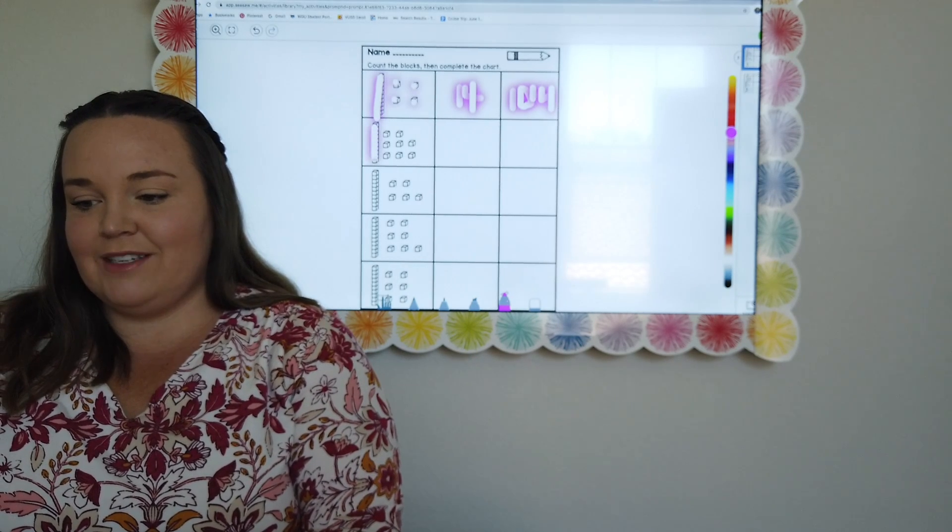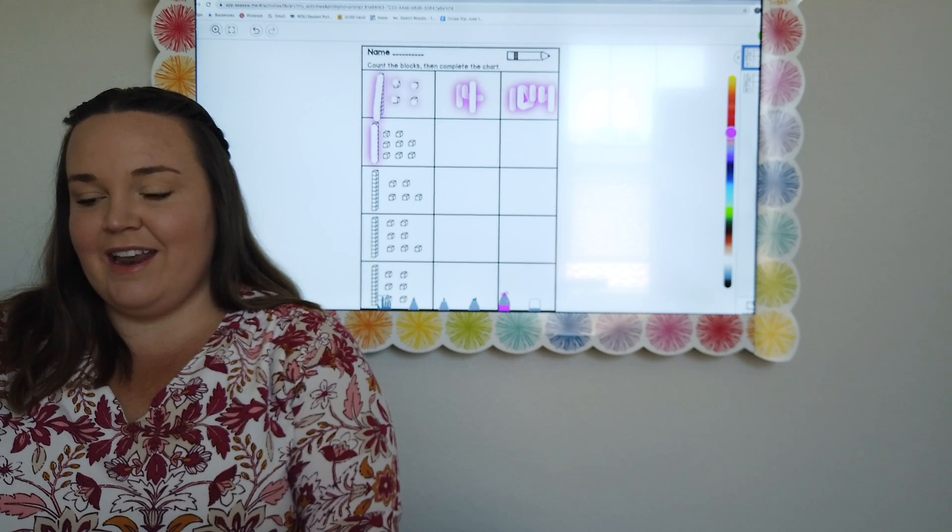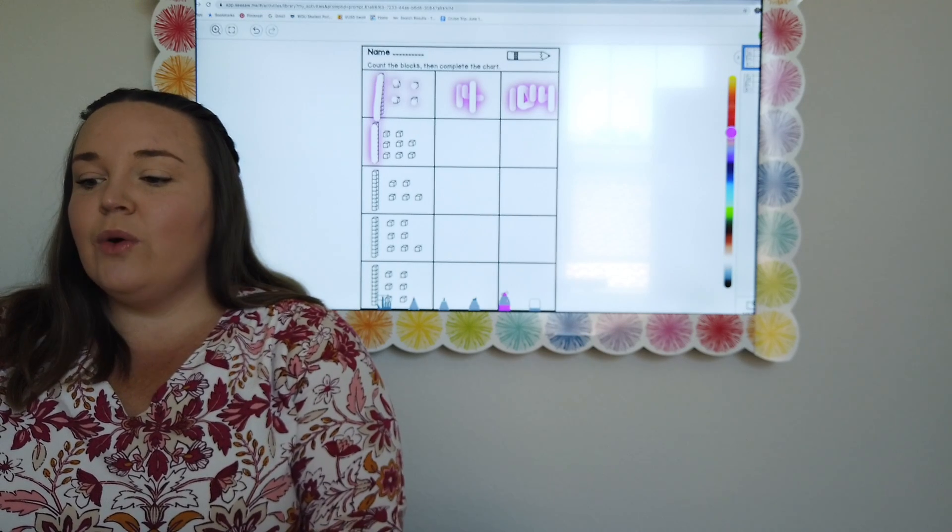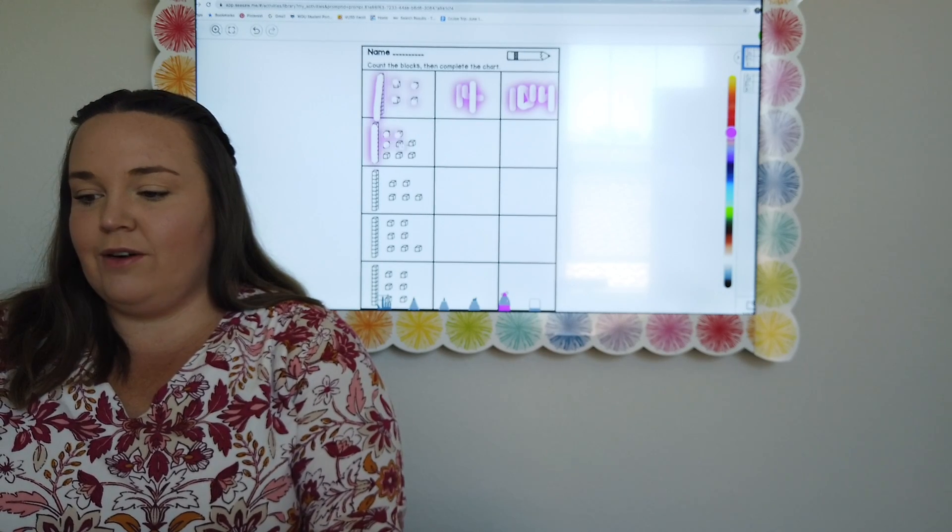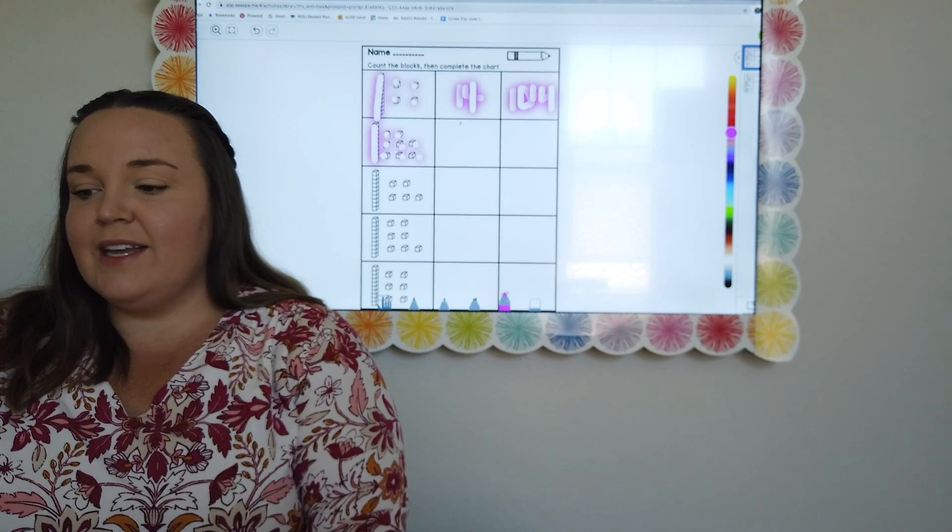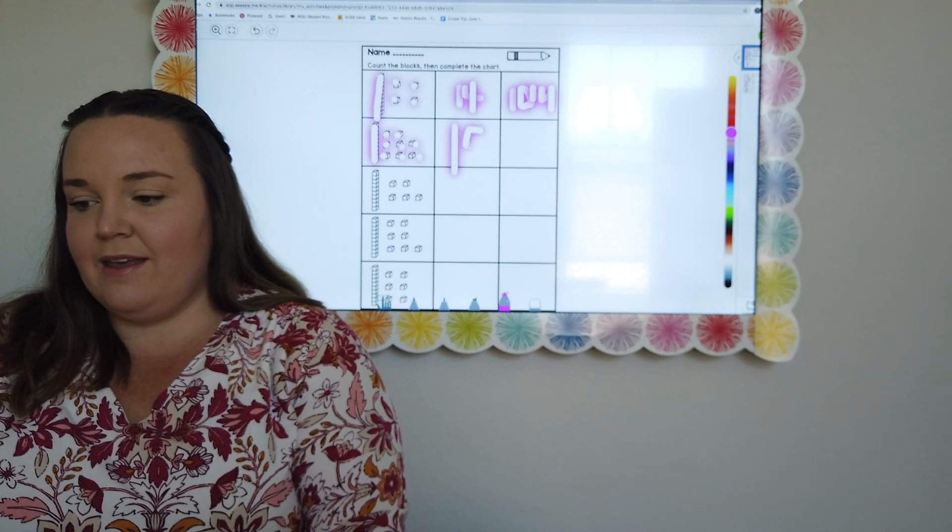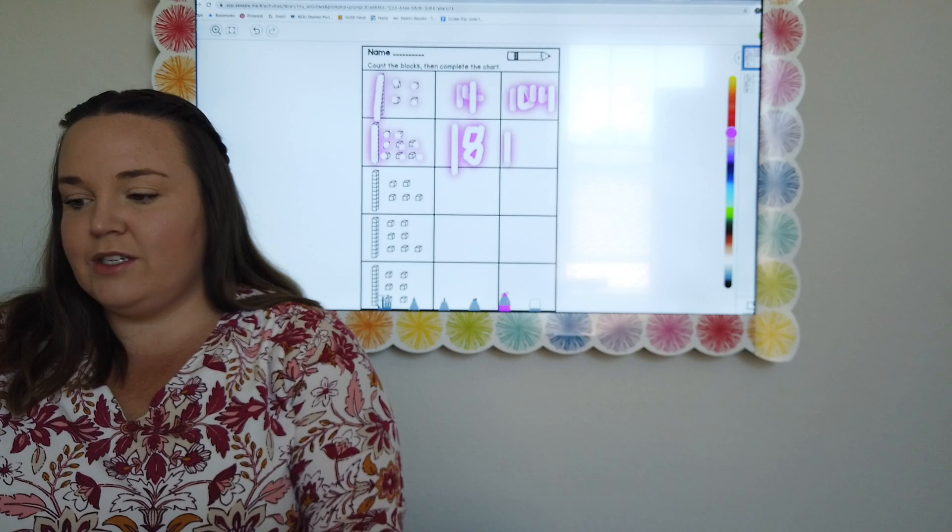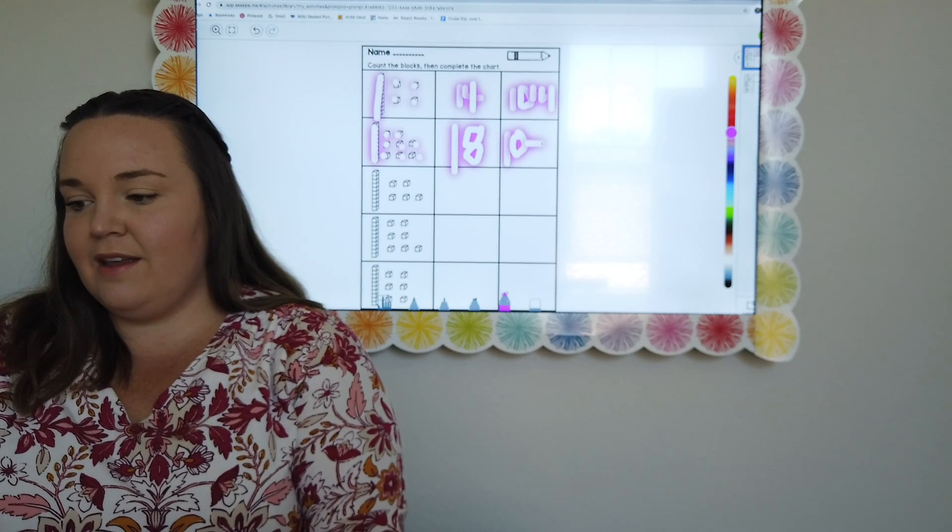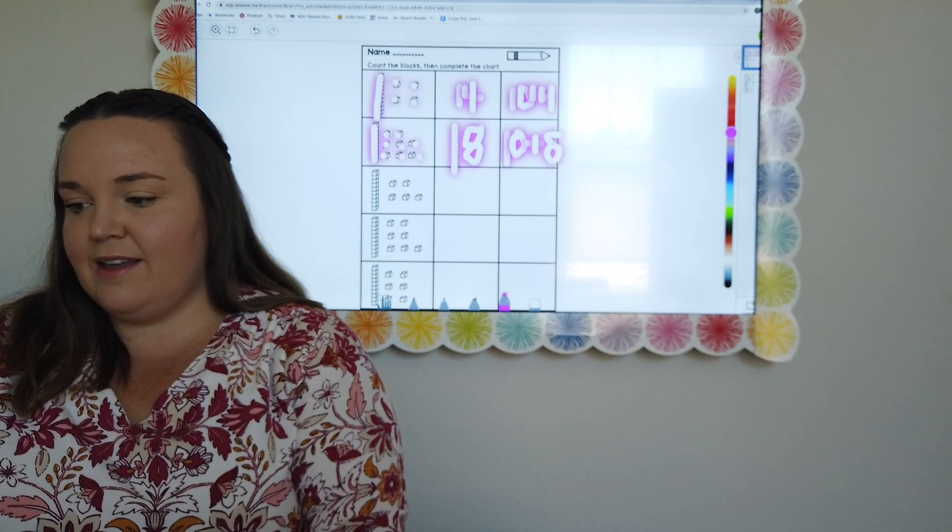Okay, this next one we know we have the tens column. So 10 and then let's see how many ones. 1, 2, 3, 4, 5, 6, 7, 8. So 10 and 8 make 18, which is also 10 and 8 more.